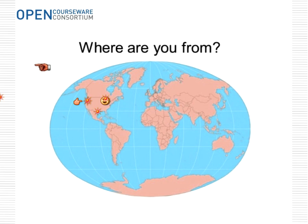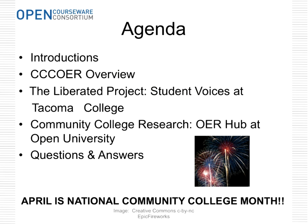Thank you for sharing your locations. Rob Farrow, one of our speakers from the Open University, is over there in Britain. Mostly it looks like we're North America today. After some brief introductions and an overview, we're going to hear from Quill on her Liberated Project at Tacoma College, then from Rob about community college research he's done with over 20 community colleges. And before we continue — April is National Community College Month, another reason to celebrate this great research.